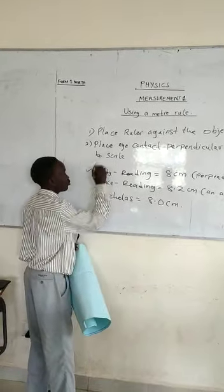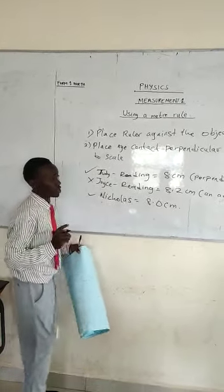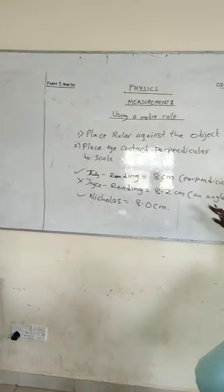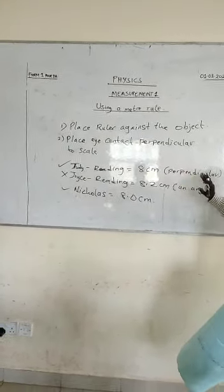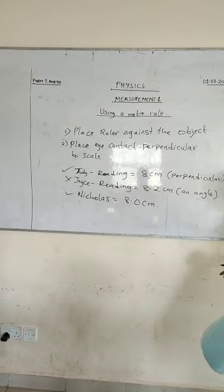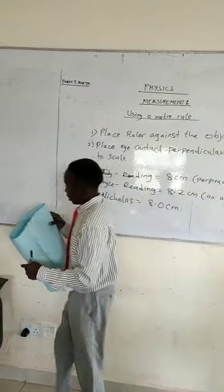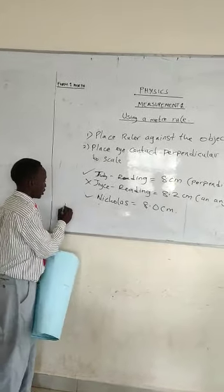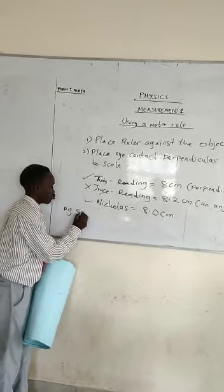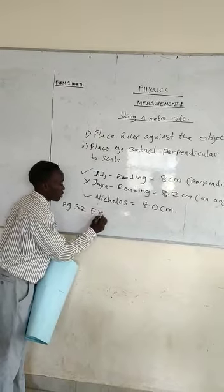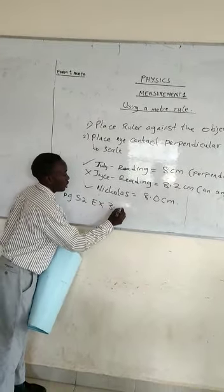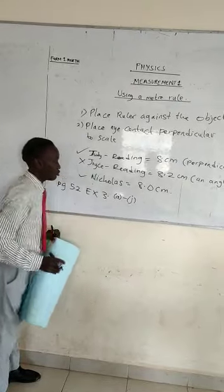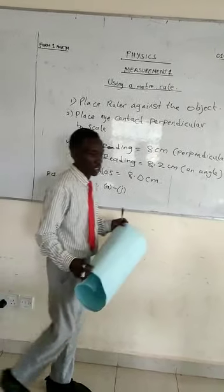So, this reading is true, and this one is the wrong answer. Basically, what I am saying is that whenever you are making a reading with a ruler, reading perpendicularly, you will get the right answer. After saying that, I will leave you with an assignment on page 52 — you do exercise 3, that is from A to J. Attempt those questions on measurement and see if you can get them correct.